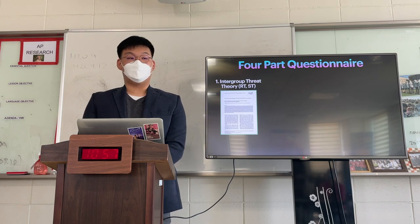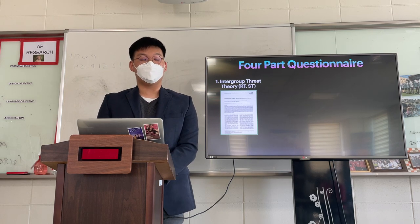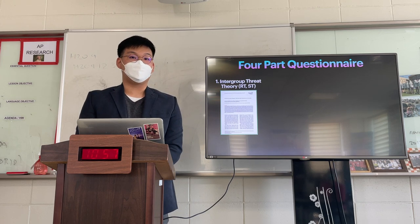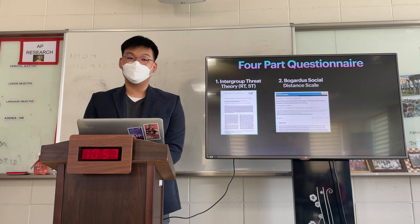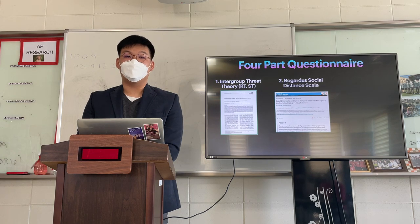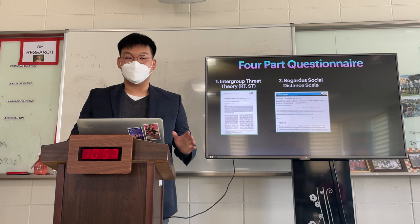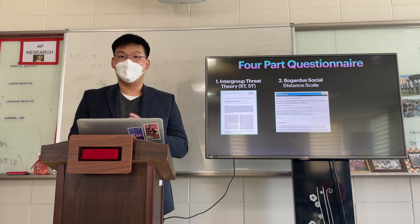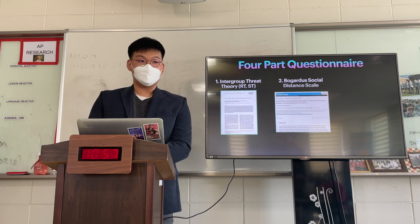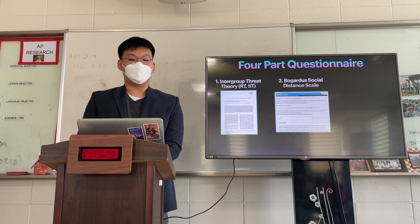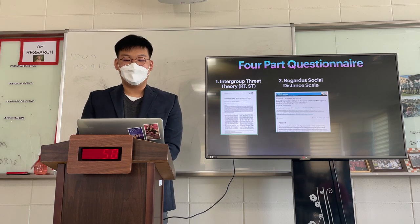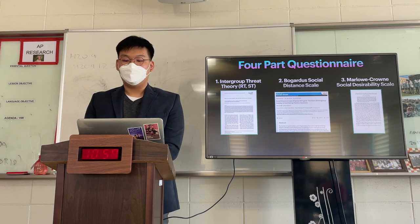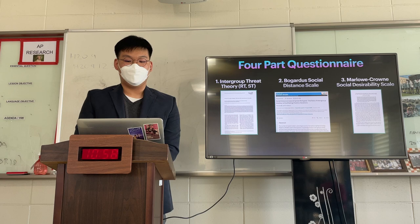The questionnaire had four components. The first two are the Intergroup Threat Theory components: realistic and symbolic threats. The third is the Bogardus Social Distance Scale, which measures the social distance a population feels against migrants or other social groups. Originally a cumulative survey of seven parts, I modified it into a seven-point Likert scale because the original results were too simplistic. The fourth component is the Marlowe-Crowne Social Desirability Scale.